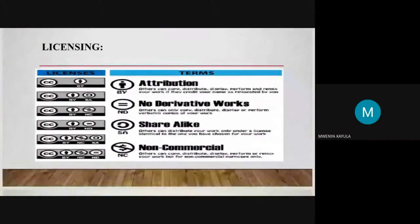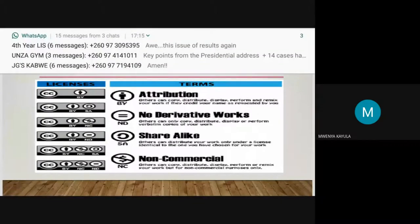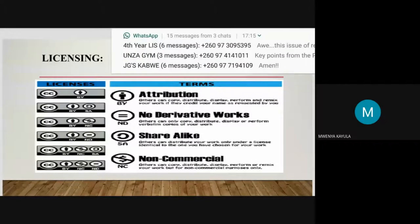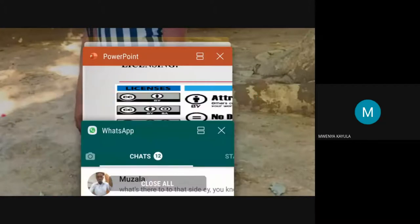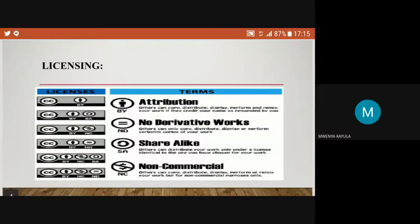There are different types of license systems, but in recent years Creative Commons has become the most popular licensing system in education. Creative Commons has designed a collection of licenses to ensure there is a suitable license for sharing content under various conditions. There are four main licensing types: Attribution, No Derivatives, Share Alike, and Non-Commercial.